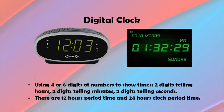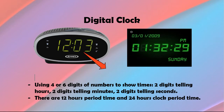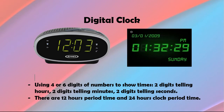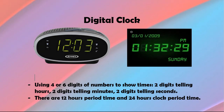Sedangkan ciri umum jam digital: Pertama, menggunakan 4–6 digit angka untuk menampilkan waktu — 2 digit pertama menunjukkan skala jam, 2 digit kedua menunjukkan skala menit, dan ada juga yang menggunakan 2 digit ketiga untuk menunjukkan skala detik. Kedua, periode waktu yang digunakan — ada yang menggunakan periode waktu 12 jam, ada juga yang menggunakan periode waktu 24 jam.